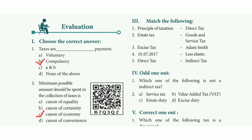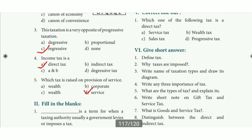Second question: the minimum possible amount should be spent in the collection of taxes — the answer is option C, canon of economy.